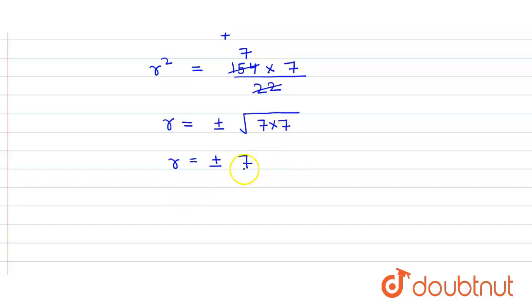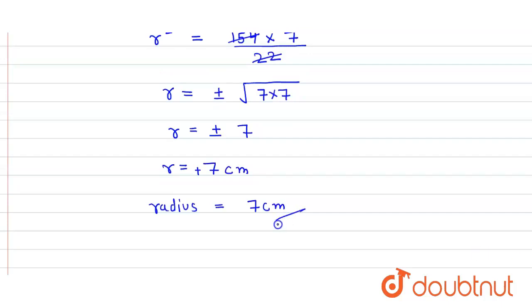So here we get two values of r, one positive, one negative, but radius cannot be negative. So we neglect that. So here we get r equals plus 7 centimeters. So the radius is equal to 7 centimeters, and that's our answer.